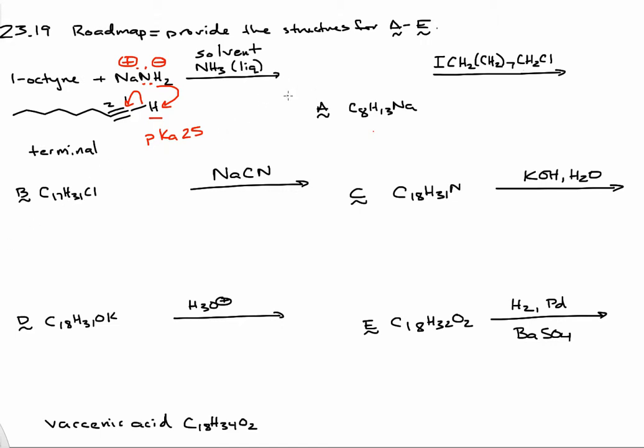So the structure of A will have a carbanion and a sodium cation. We can see that all we've done is remove a proton from 1-octyne, and now we have a sodium cation. So this matches the structure we've proposed. The molecular formula matches this structure.